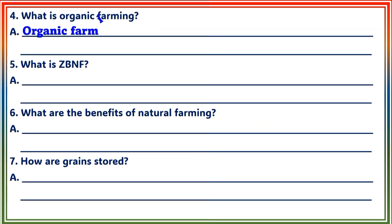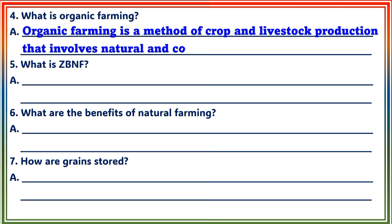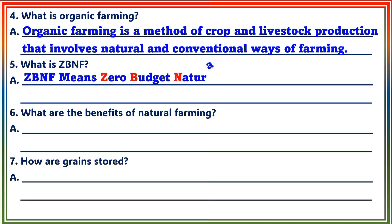Question 4: What is organic farming? Answer: Organic farming is a method of crop and livestock production that involves natural and conventional ways of farming. Question 5: What is ZBNF? Answer: ZBNF means zero-budget natural farming.